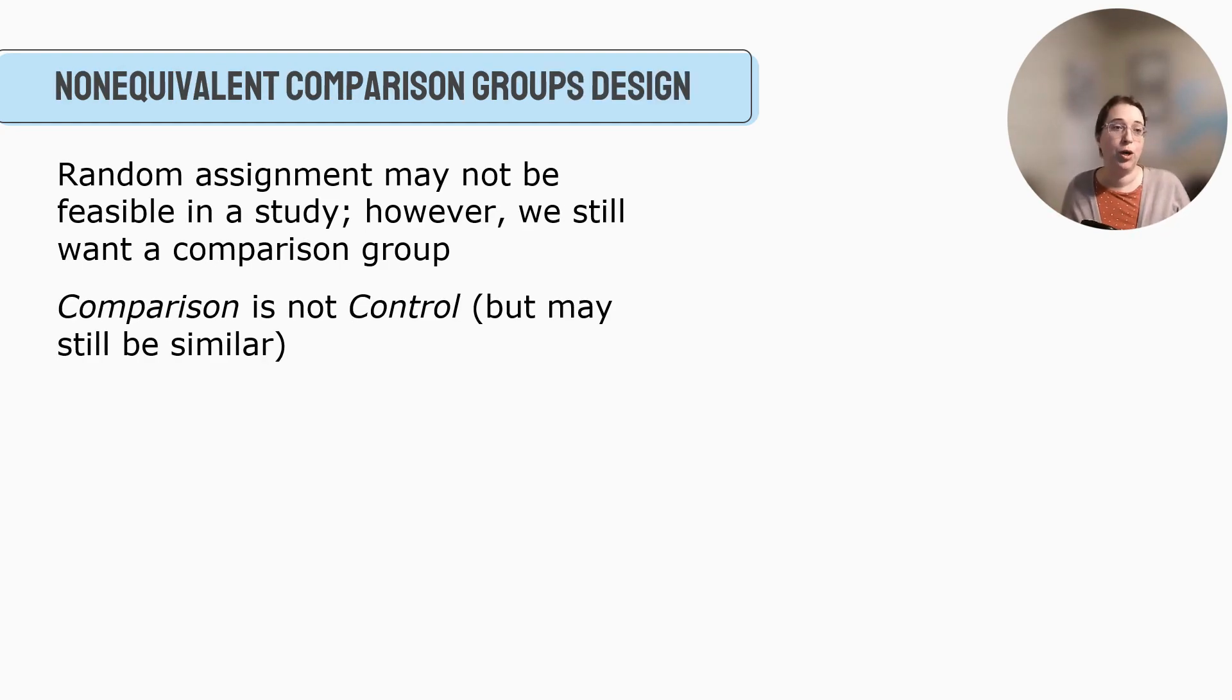So random assignment in social work research may not be feasible to our study. However, we still need to have a comparison group. If you don't have a comparison group, how do we know changes didn't happen because of something external to your study? So we really want a comparison group and we call it a comparison group, not a control group, because a comparison group is when you have a group that is similar, ideally, but there's no random assignment. You can only say it's a control group when you have random assignment and you have literally randomly placed people into an experimental group or control group.